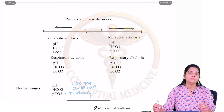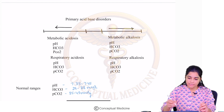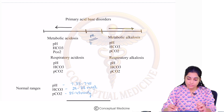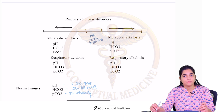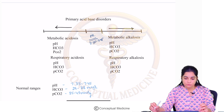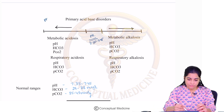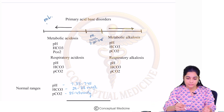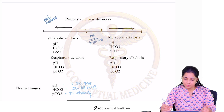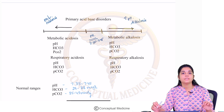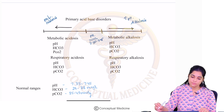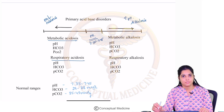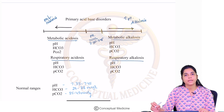Now let us understand the primary acid-base disorders. The aim of the body is to maintain the pH from 7.35 to 7.45. If the pH decreases below 7.35, this is called acidosis. If the pH increases above 7.45, it is called alkalosis. Acidosis can be classified as metabolic acidosis and respiratory acidosis, and alkalosis as metabolic and respiratory alkalosis.